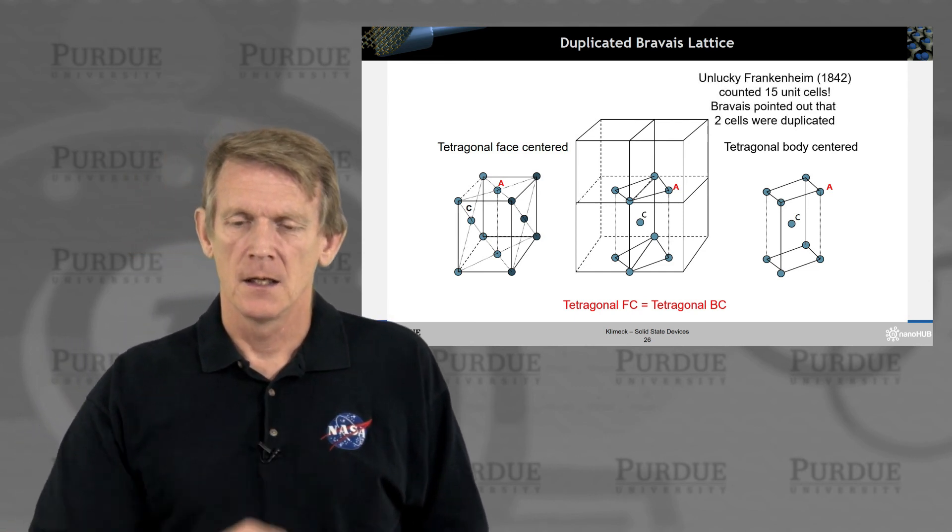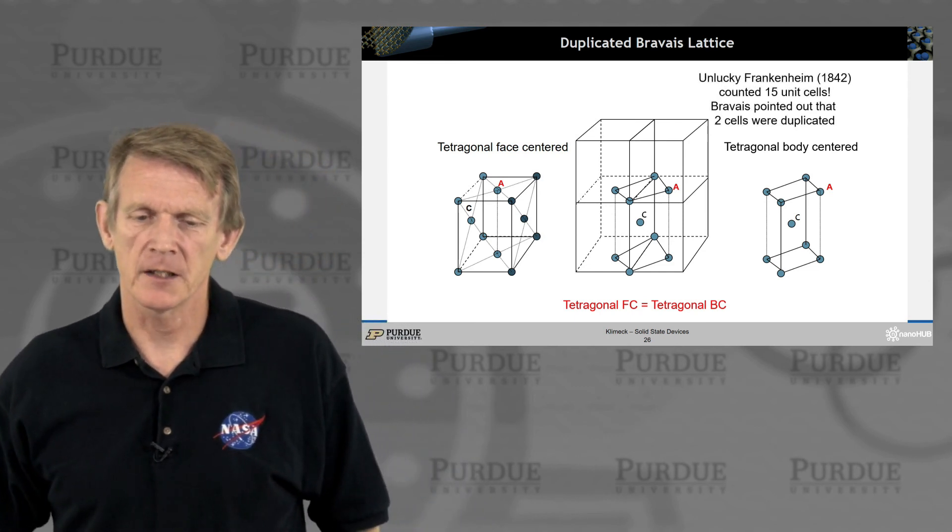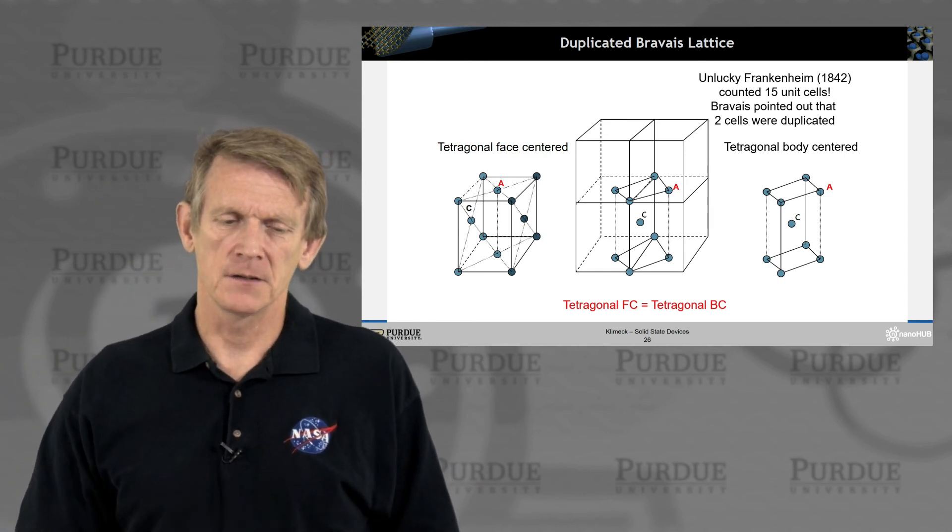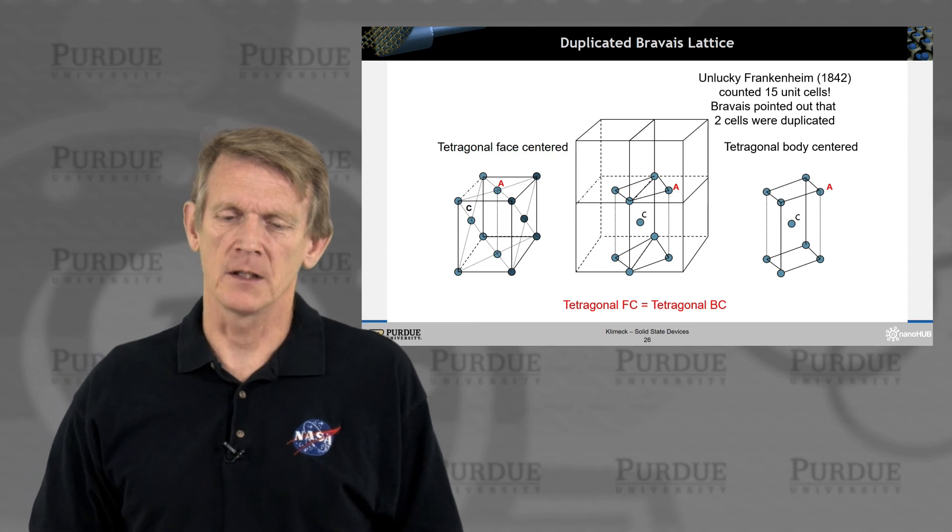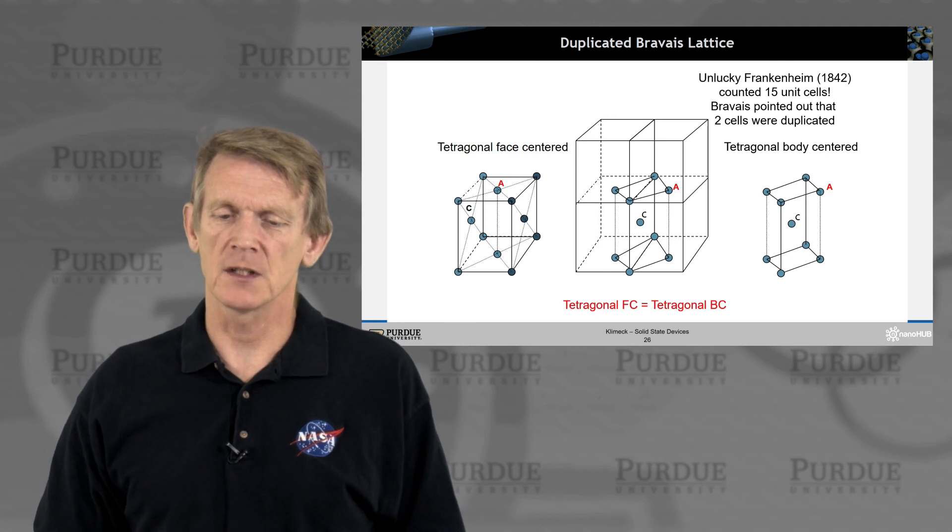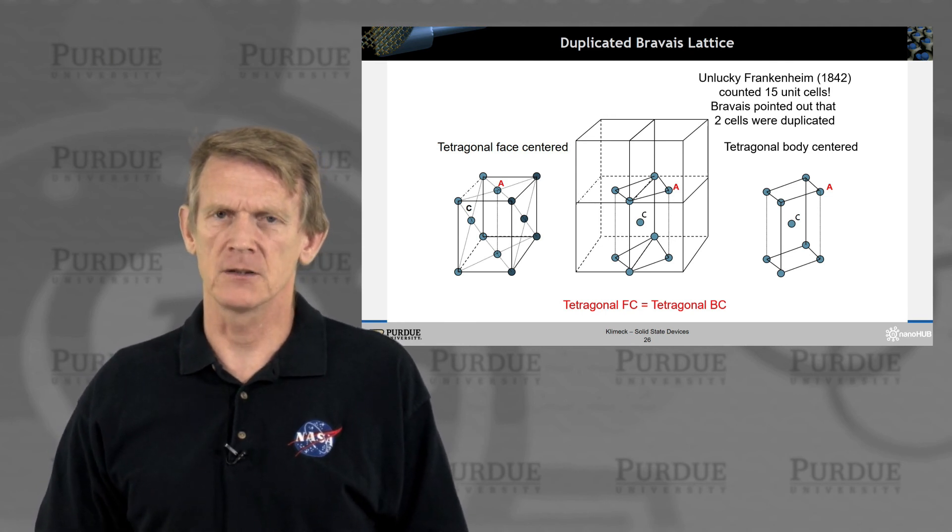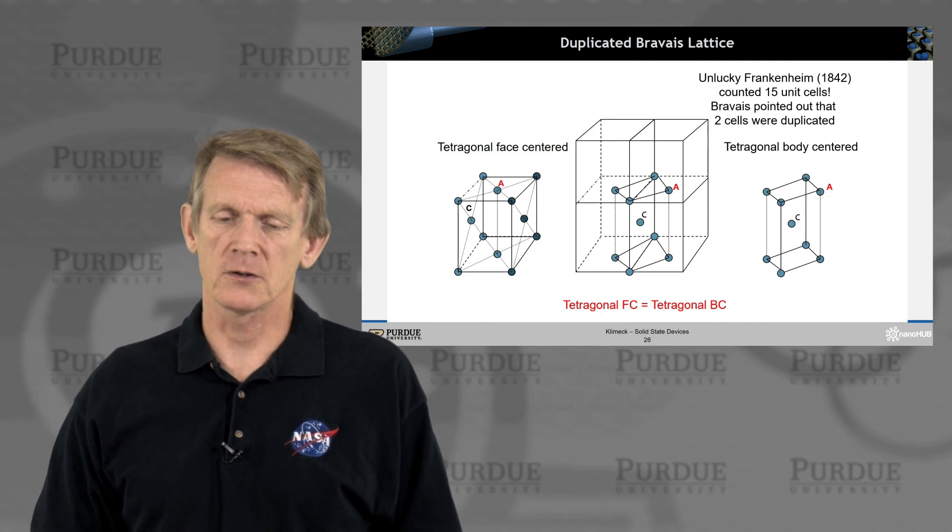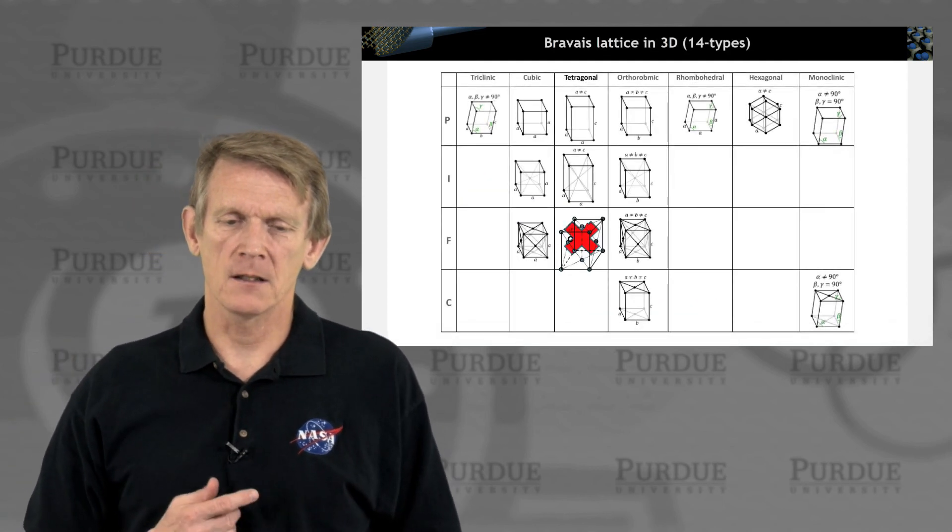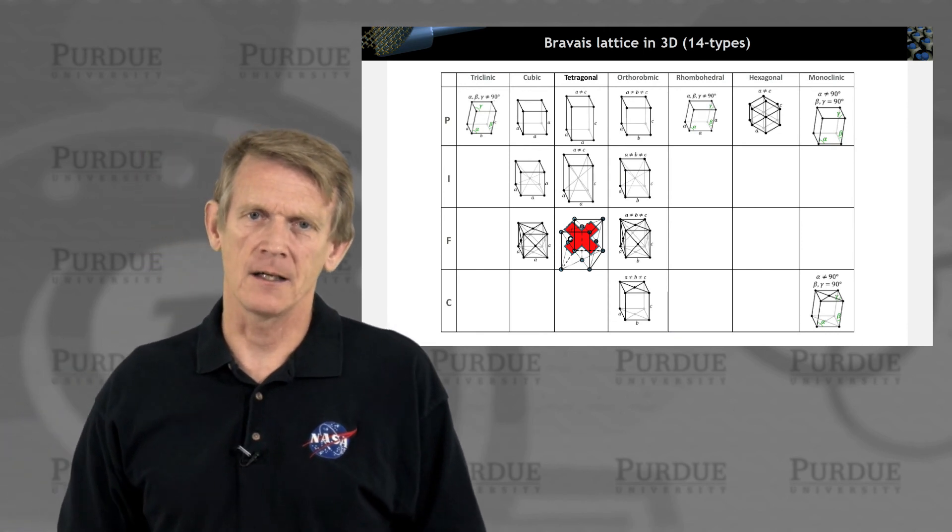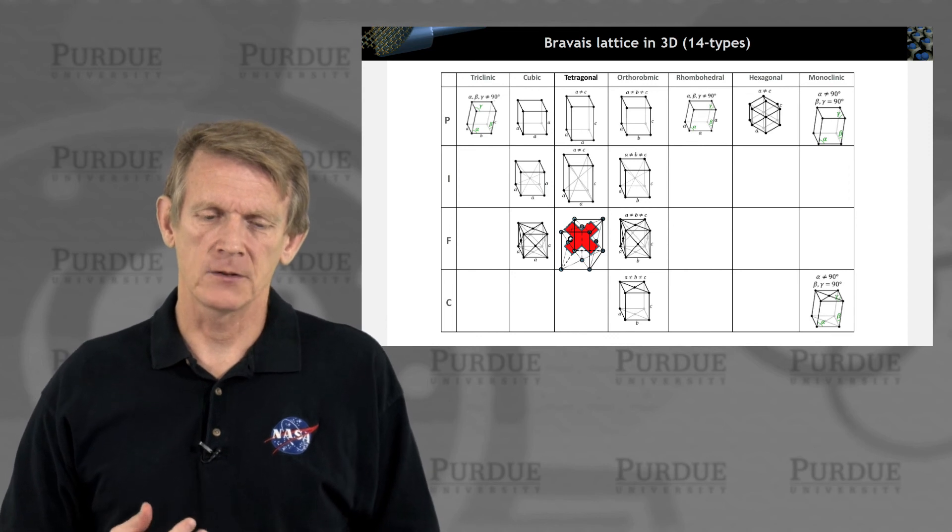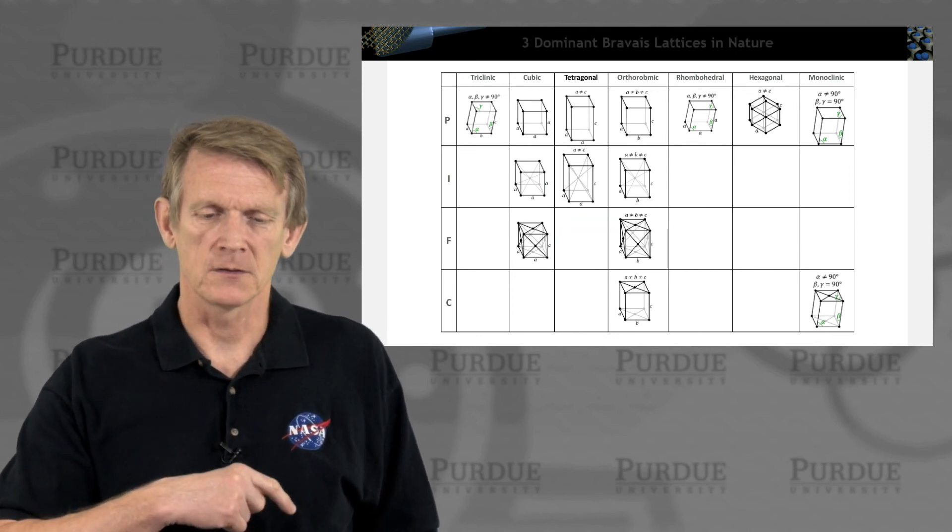So there was a researcher called Frankenheim who counted 15 unit cells and listed the tetragonal face-centered one. But Bravais was the person that pointed out that there are two cells that are effectively duplicates in terms of the overall crystal description. And that is why today we think of Bravais lattices, not of Frankenheim lattices, because Bravais established the final, so to speak, of these 14 crystals.